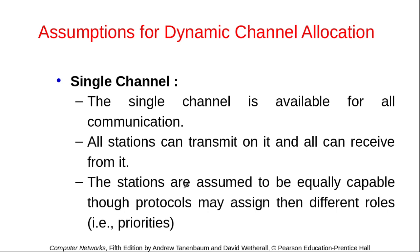The second assumption is that there is only a single channel available for communication — stations both transmit to and receive from it. Further, the stations are all assumed to be of equal capability, though there may be different rules or priorities assigned to them. They can generate frames at the same rate and process them after reception, so their basic capabilities are assumed to be equal.